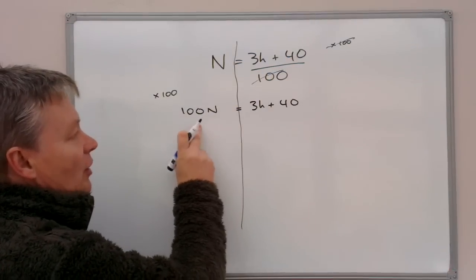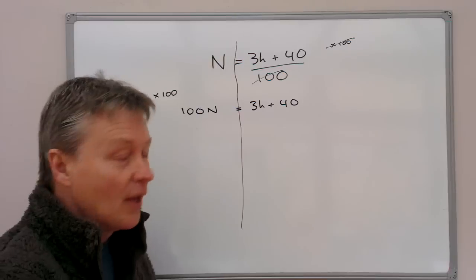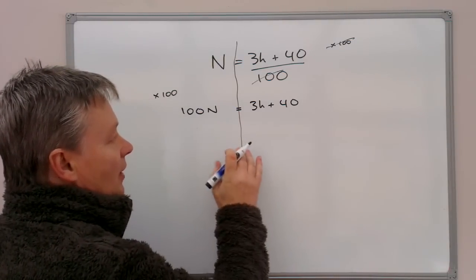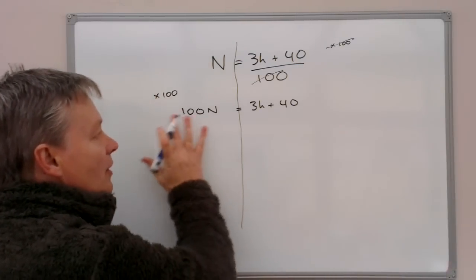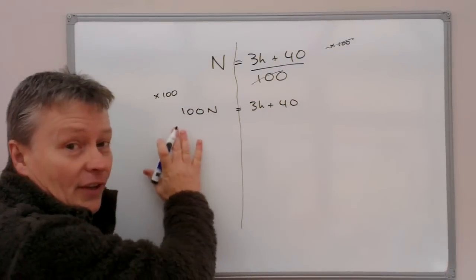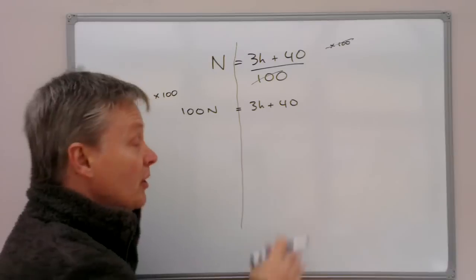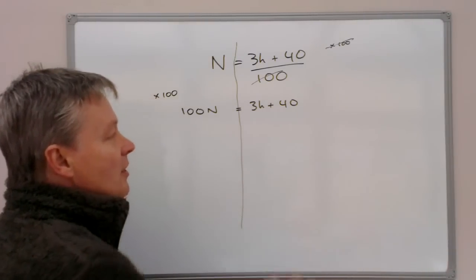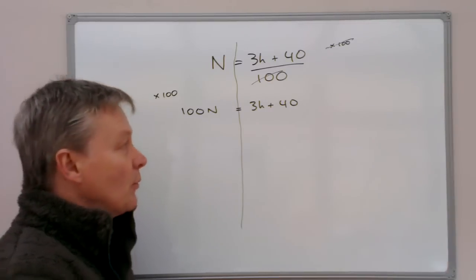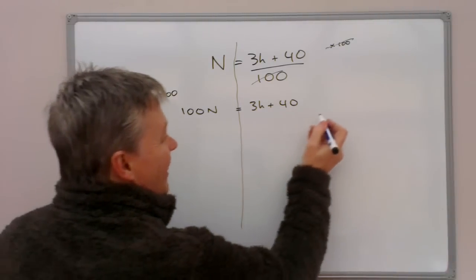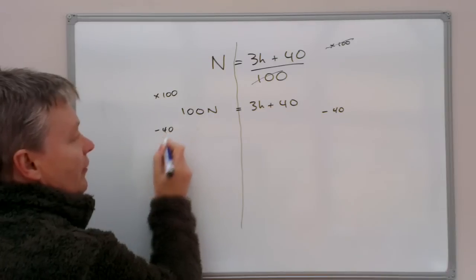So I now have 100N on one side and 3H plus 40 on the other. So in order to get a value of H to one side, I need to make sure that my numbers and anything else is on this side. And my H value is left on its own eventually on this side. So what I'm going to do is I'm going to take 40 from both sides, minus 40 from both sides.